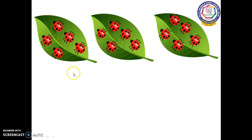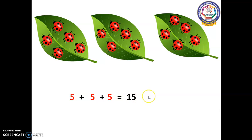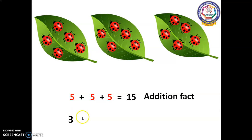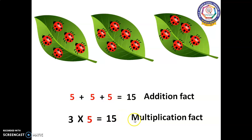Here we are repeatedly adding the number. That is five plus five plus five equals fifteen. This is called an addition fact. Three groups of leaves, that is three leaves, multiplied by five bugs, equals fifteen. This is called a multiplication fact.